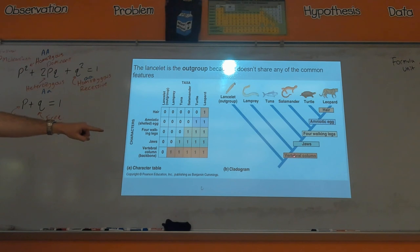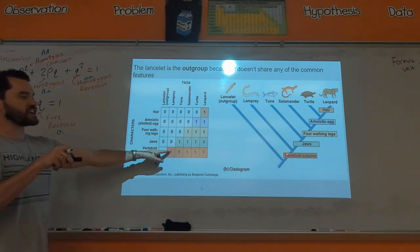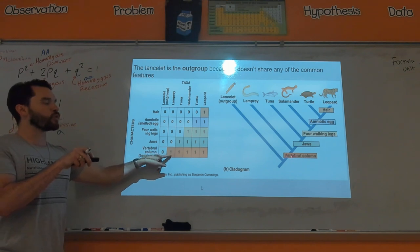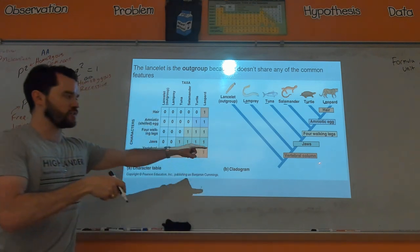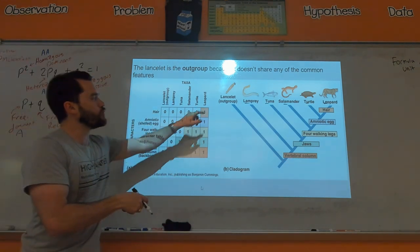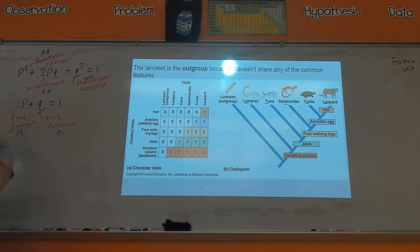Conversely, the lancelet is the only thing that does not have a vertebral column. So what we do is the lower down something is, so the vertebral column, this little branch point right there, it's going to be at the very bottom because more of the organisms—all five of these organisms—have a vertebral column. And then the outgroup, this is the thing that doesn't share any common features, so that's why the lancelet is the outgroup, because the lancelet is the only thing that wasn't invited to the vertebral column party, so it is the thing that's kicked out.